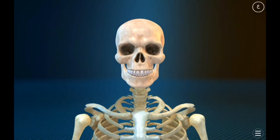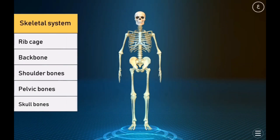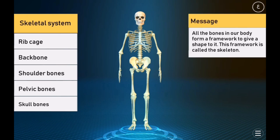The human skeletal system. Do you know what gives the different parts of the body their different shapes? All the bones in our body form a framework to give a shape to it. This framework is called the skeleton.